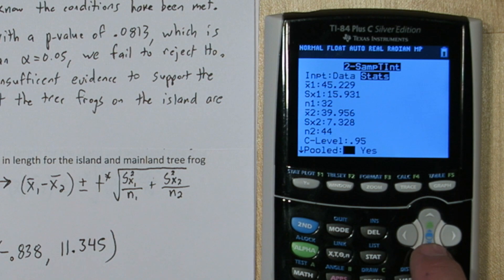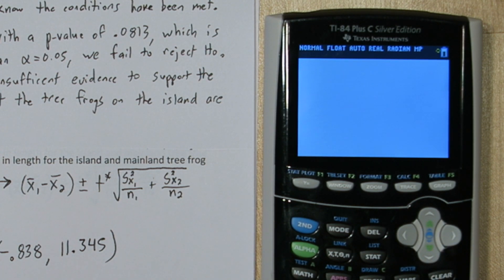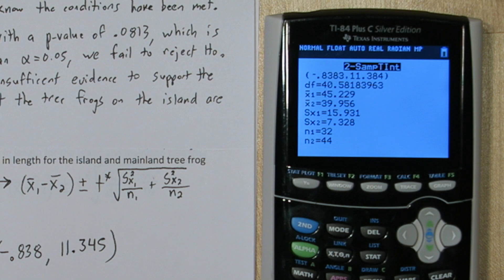And for T procedures, always choose no for pooled. And we'll press calculate. And you can see this confidence interval matches what we got by hand.